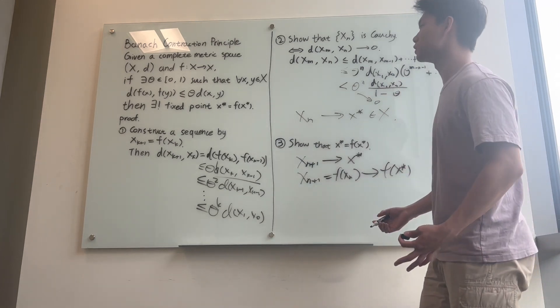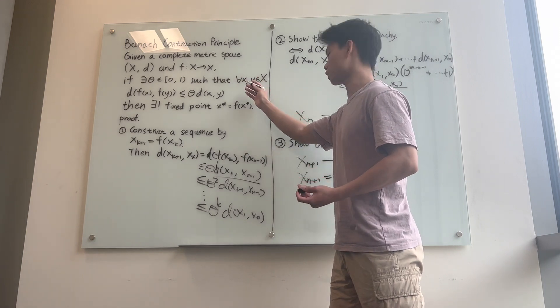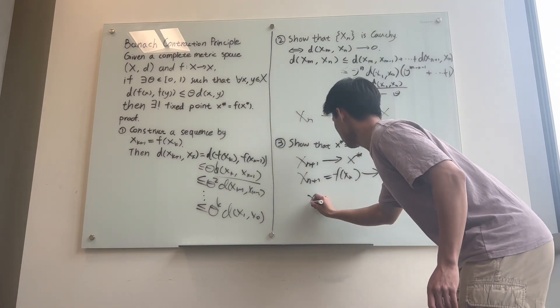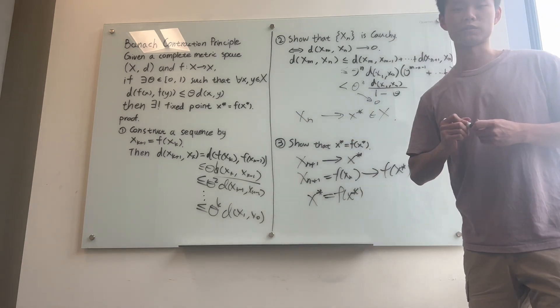by continuity of f implied by this hypothesis. One can check it directly through the definition of continuity. And therefore, x* equals f(x*). We have proven the existence of the fixed point.